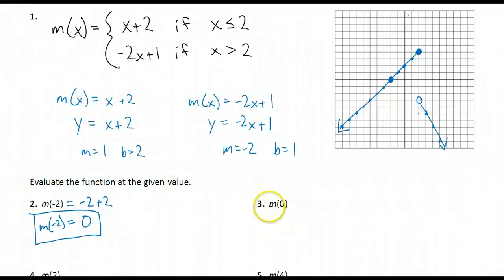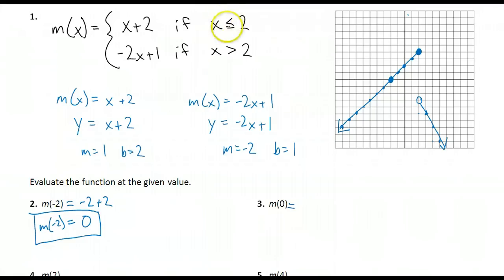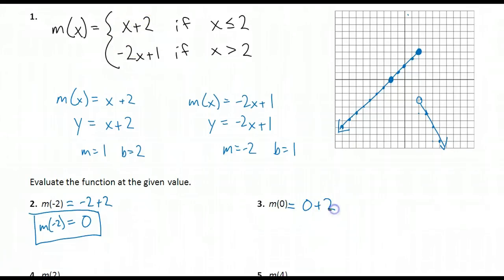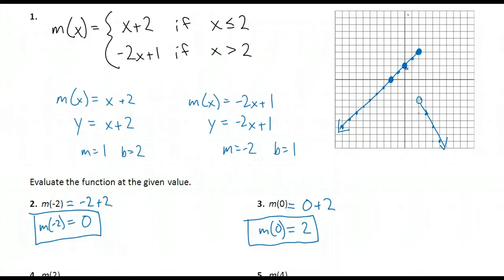How about the value m of 0? I first need to figure out which equation to plug 0 into by looking at the if statements. Is 0 less than or equal to 2, or is 0 greater than 2? 0 is less than or equal to 2, so I plug 0 into the first equation. Evaluating gives m of 0 equals 2. If I input 0 on my graph, my output is 2.